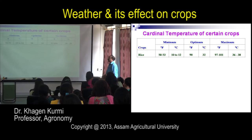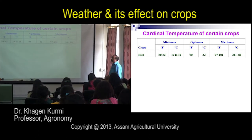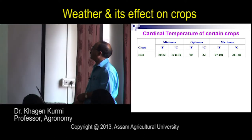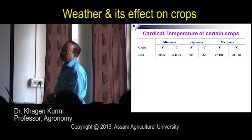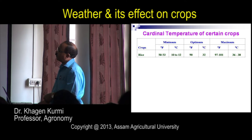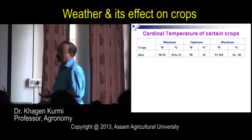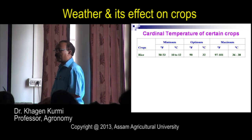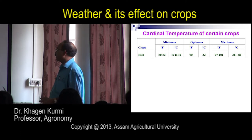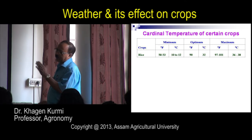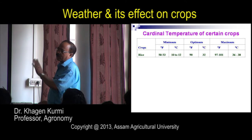At the time of flowering for rice, if temperature goes beyond 37 or 38°C, or falls below 10°C, there will be no seed setting. That is why for rice in winter season, if you delay sowing, it will not come into flower. There is a cutoff date beyond which transplanting of rice cannot be done.